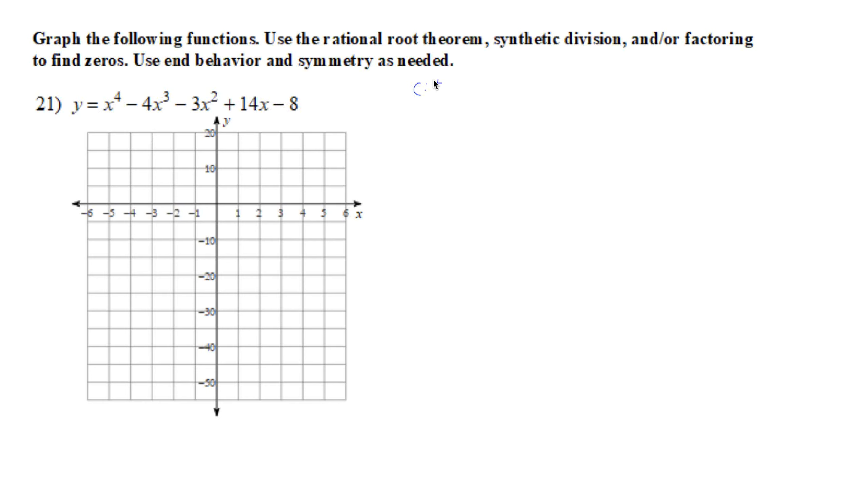So plus or minus 1, plus or minus 2, plus or minus 4, and plus or minus 8. D factors of the leading coefficient, which is just 1, so it's just plus or minus 1. And we learned that C over D, if D is 1, is just C, so it's going to be these 2, 4, 6, 8 different possibilities.